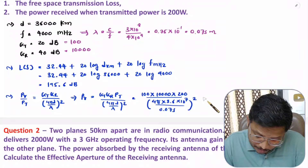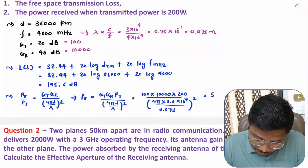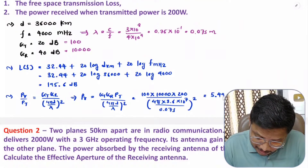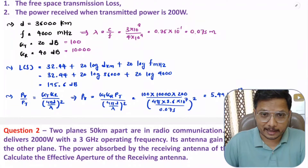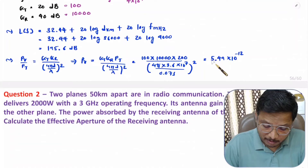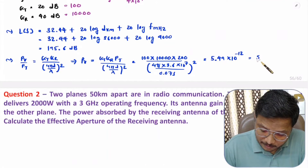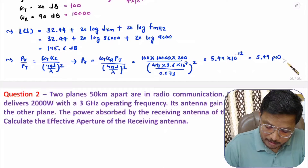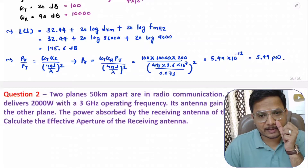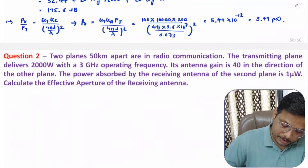The answer is 5.49 × 10⁻¹² watts, which can be expressed as 5.49 picowatts. That is how simply we can solve this type of question. Let us now solve the second question.